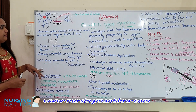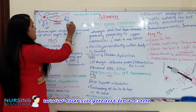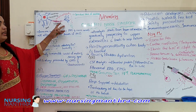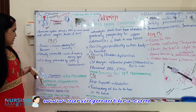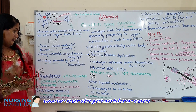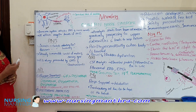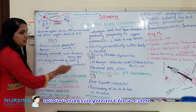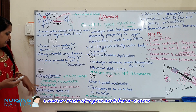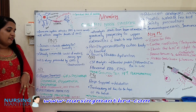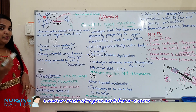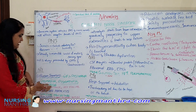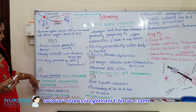GBS — we can say that means gradual block of sensation — there will be gradual block of sensation in GBS. Signs and symptoms mainly include bulbar symptoms. Bulbar symptoms include: dysphagia — difficulty in swallowing; dysphonia — difficulty in articulating sound, difficulty in speaking; and dysarthria — also difficulty in speaking.